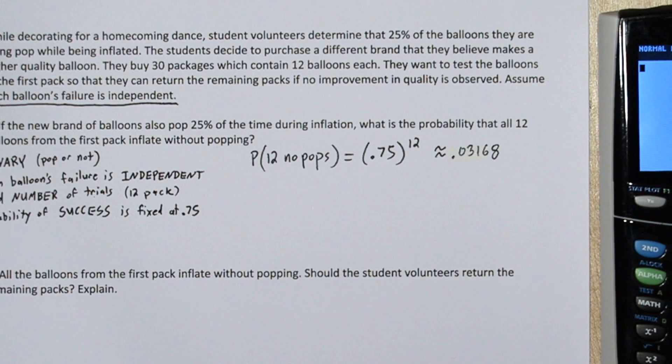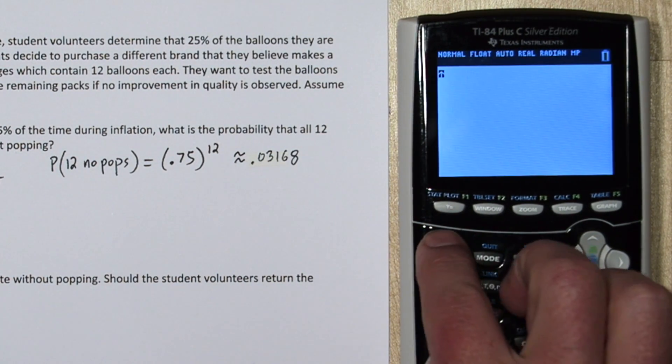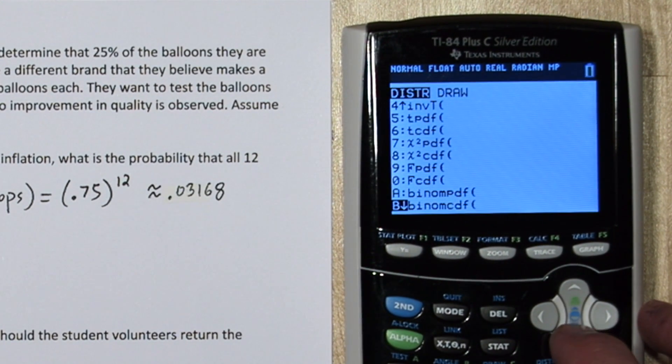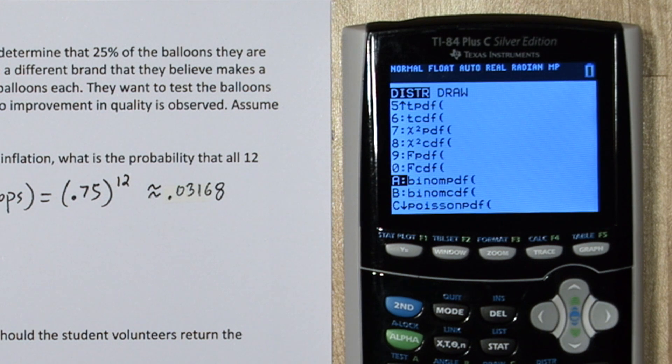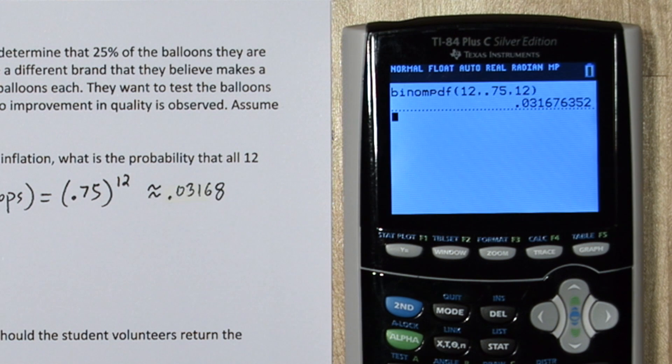Since this follows a binomial setting, you can also use your calculator for this probability. Press 2nd and then VARS. And scroll down towards the bottom. Here's our binomial options. Choose Binomial PDF. So since we had 12 balloons, we have 12 trials. The probability of the balloon not popping is 0.75. We're interested in all 12 not popping. We can see this matches the probability we already found by hand.